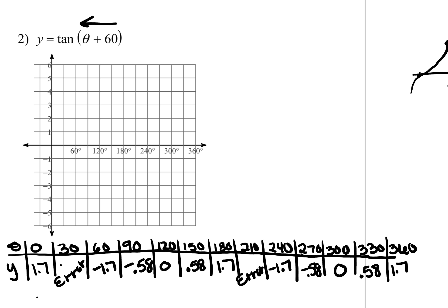I'm not as interested in the values like 1.7 or 5.8, but I'm very interested in the angles that give me either error or zero. The error angles are going to be my asymptotes, and then I'm also going to have my x-intercepts.